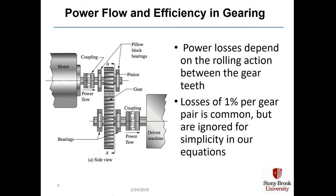Spur gears are remarkably efficient. Power losses depend on the rolling action between the gear teeth, but because that rolling action is incredibly smooth, losses of 1% or less per gear pair are common. When calculating forces, torques, and power transfers in gear teeth, we completely ignore these losses for simplicity.